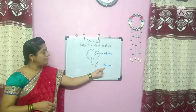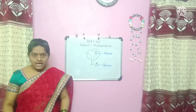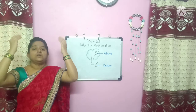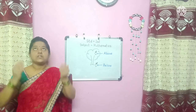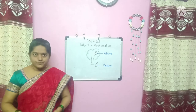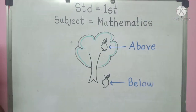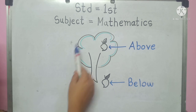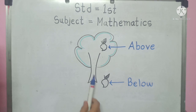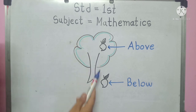Above means 'वर', below means 'खाली'. Now look at the blackboard carefully, students. Observe the picture and tell me what do you see in this picture. This mango is above the tree, and this mango is below the tree.